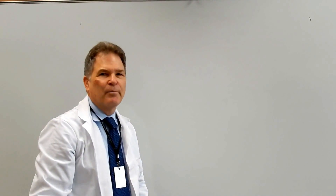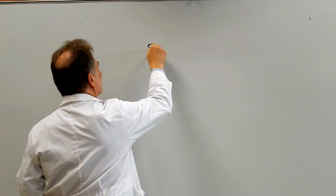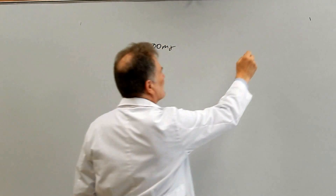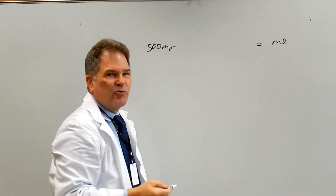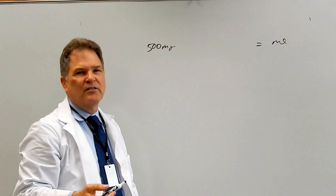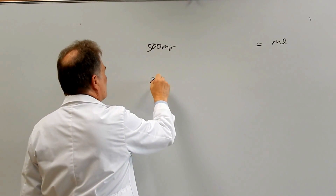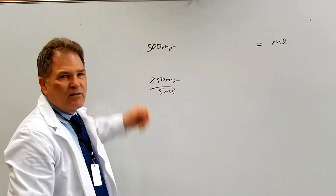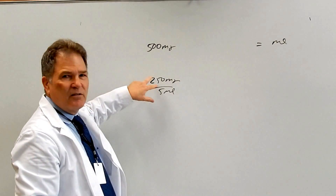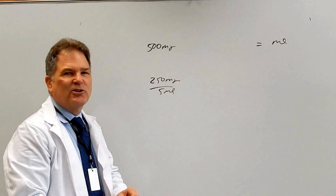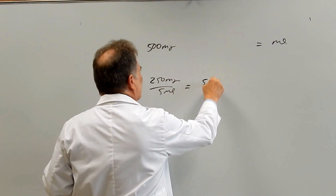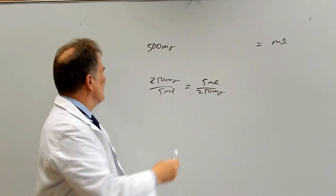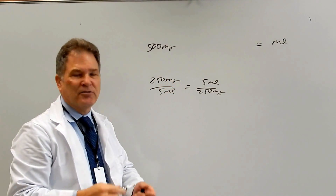Now let's do a dosage calculation. The doctor prescribed 500 milligrams and we want to know how many mls to dispense. The ratio in this case is the strength of the drug — say 250 milligrams per 5 mls of amoxicillin. Just like with grams and milligrams, we can flip that ratio upside down: 5 mls over 250 milligrams, because 250 milligrams is the same as 5 mls of that solution.